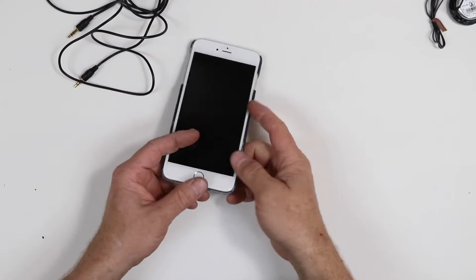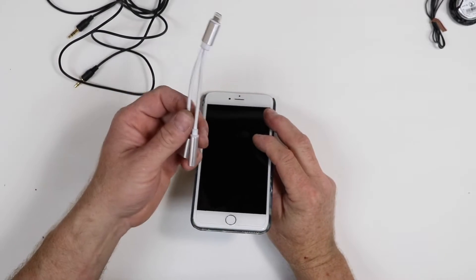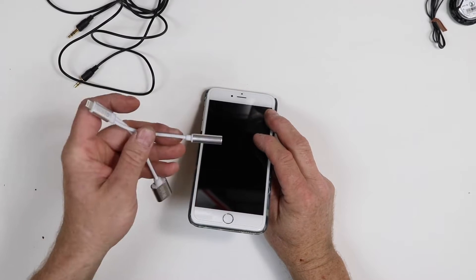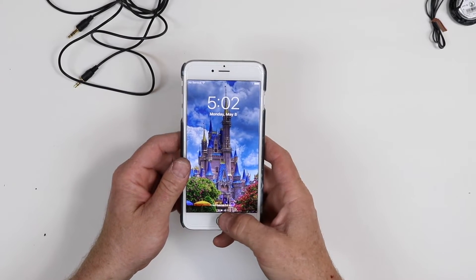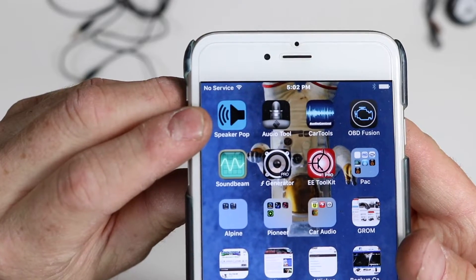So for this trick, you're going to need some form of an iDevice with a headphone jack. If you've got a new one, you could use something that converts the lightning to headphone jack, too. That'll work fine. You want to turn it on, go to the app store, and you want to download an app called Speaker Pop.